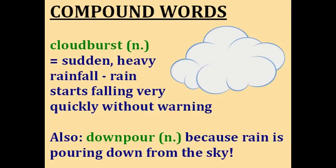Cloudburst. You probably already know that this is a cloud, and the word burst means to explode. So a cloudburst is a sudden heavy rainfall when rain starts falling very quickly without warning — it's like the cloud exploded with rain. Another compound word for heavy continuous rain is a downpour, because rain is just pouring down out of the sky.